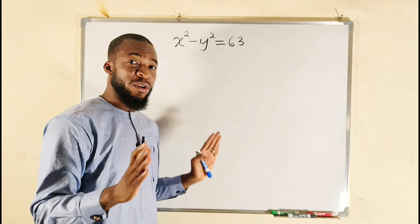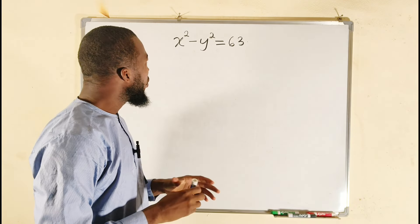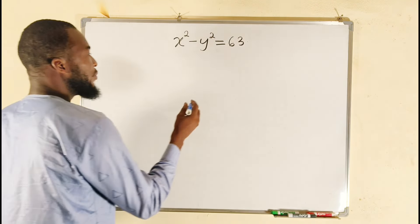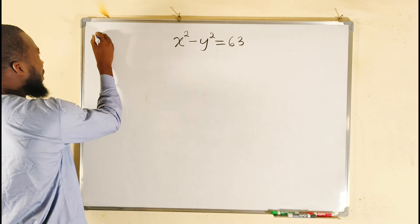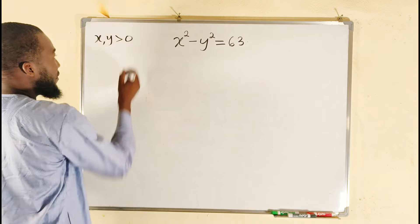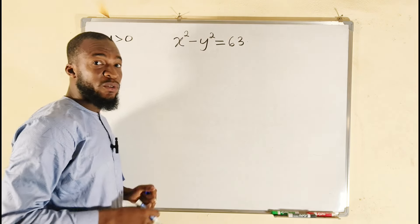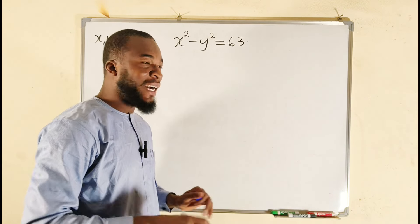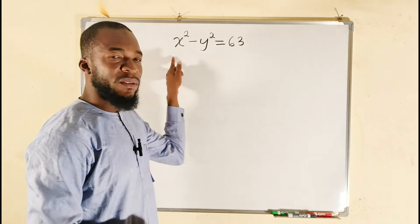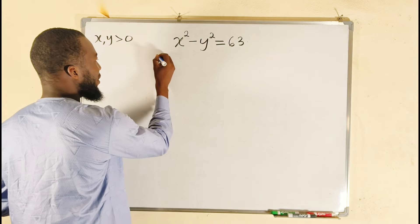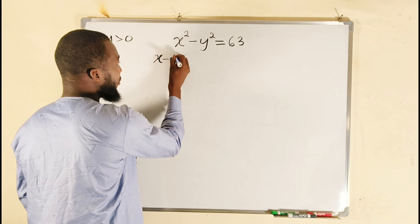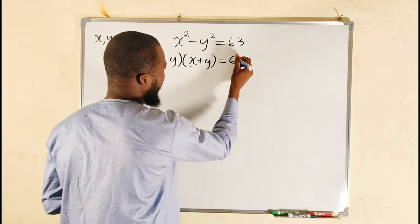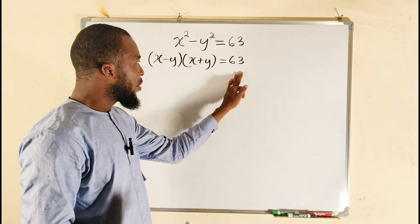Now we have a single Diophantine equation. To make our work easier, I would like to choose both x and y to be positive numbers. So let me put my condition: both x and y are greater than zero, meaning we choose our values to be positive. I will show you why I choose positive numbers — it is to minimize time. Remember that x squared minus y squared is nothing but the difference of two squares, which can be factored as x minus y multiplied by x plus y, and this equals 63.